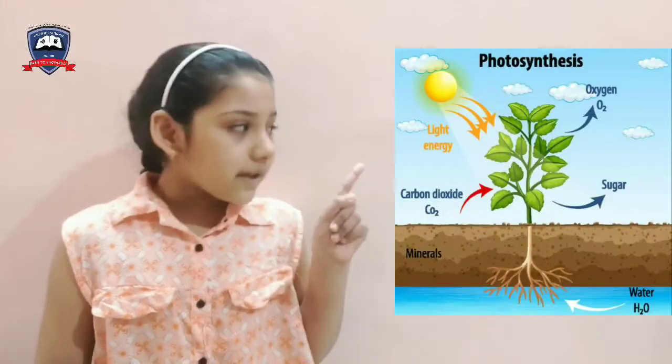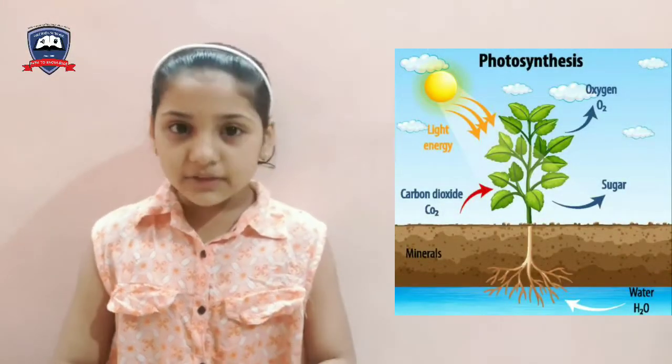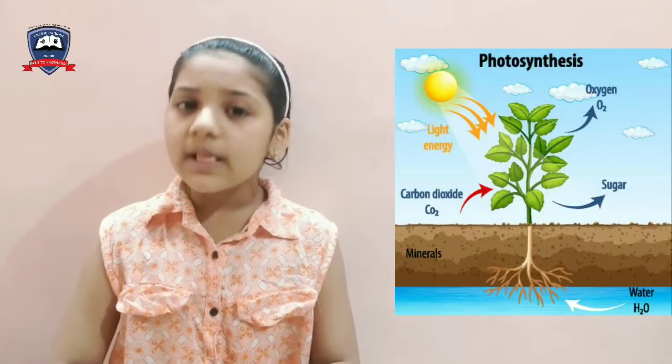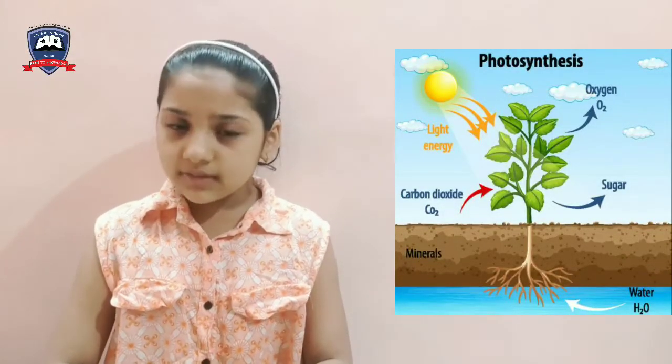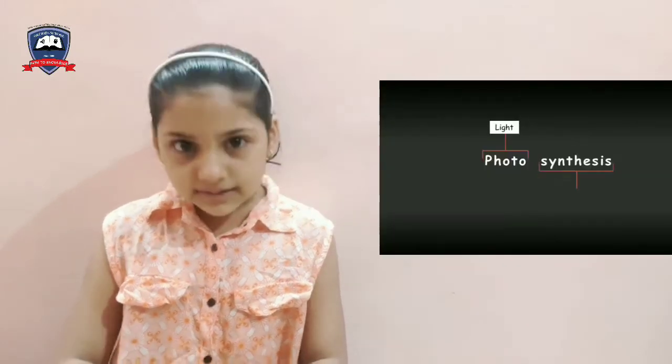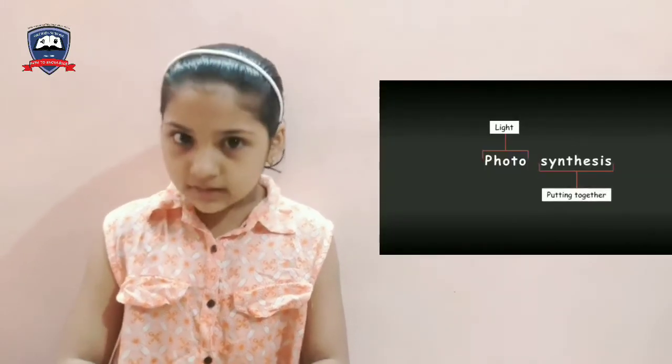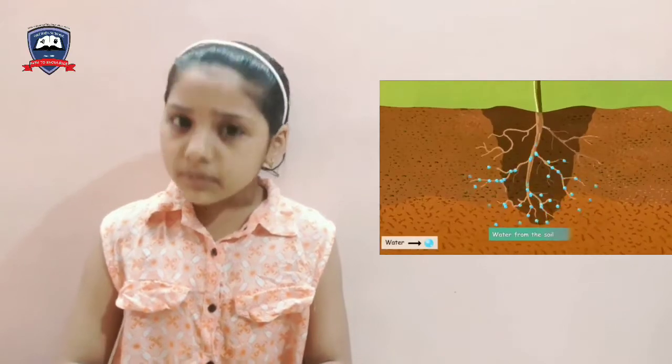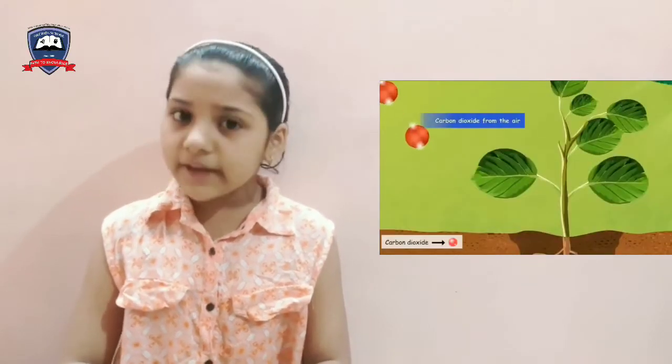The process by which plants make food is called photosynthesis. Photo means light and synthesis means putting together. Leaves need water from soil, carbon dioxide from air and sunlight to make food.